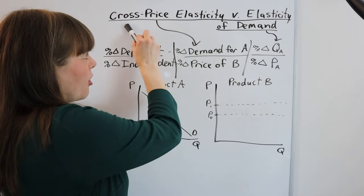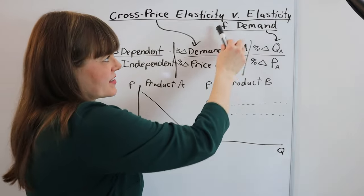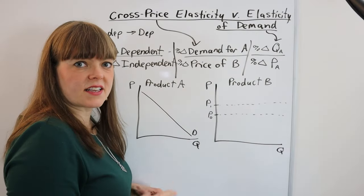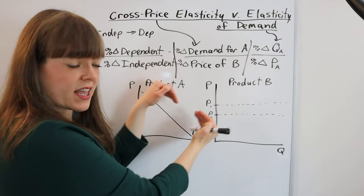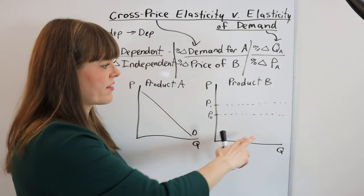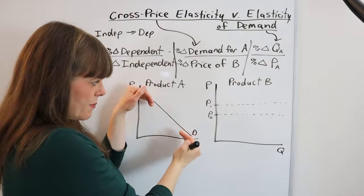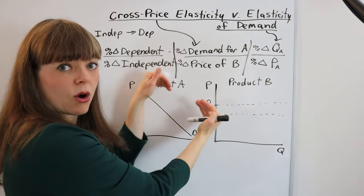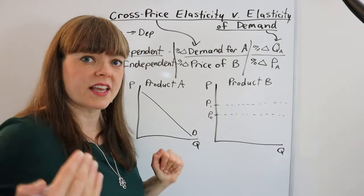What's the difference between cross-price elasticity and elasticity of demand in economics? Cross-price elasticity measures how much the demand curve moves in or out in response to some other product having a change in price. That's the difference — elasticity of demand relates to the shape of the demand curve, while cross-price elasticity is about how much that demand curve moves in or out.